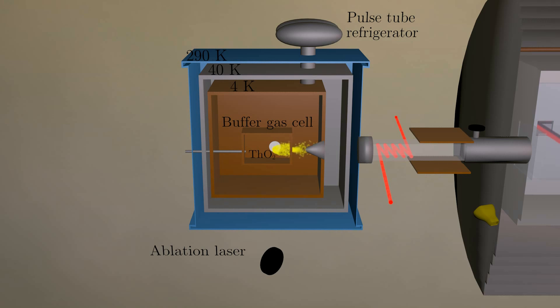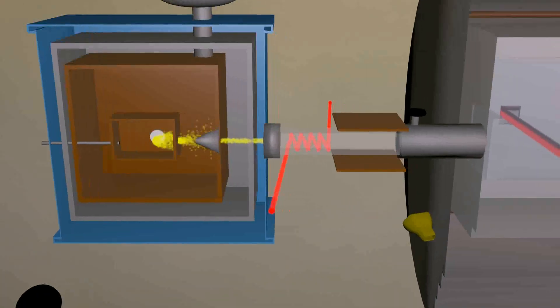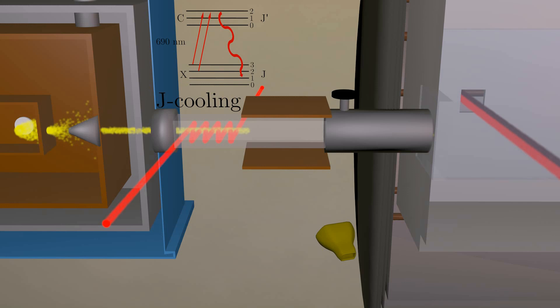Thorium oxide molecules are created by ablating a ceramic with a pulsed laser. The thorium oxide molecules are cooled by the buffer gas and caught up in its flow, making a cold molecule beam. Most of the thorium oxide molecules are in the lower rotational levels of the electronic and vibrational ground state.